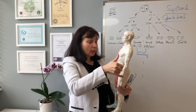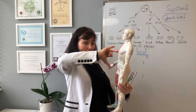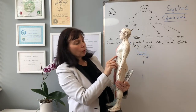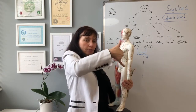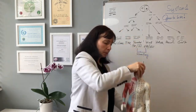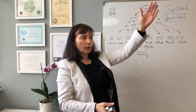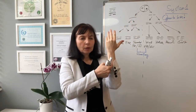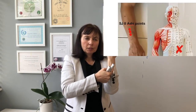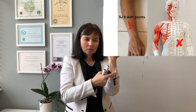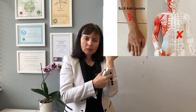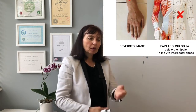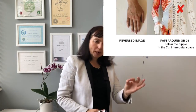But maybe we can find something else — let's reverse the image. So where will Gallbladder 24 be on the reverse image? If we put the right arm upside down, that will be somewhere mid-arm at that level. So we palpate Sanjiao points in the middle of the arm, find the ashi points, and insert the needle. Believe me — the pain will go away in a few seconds.